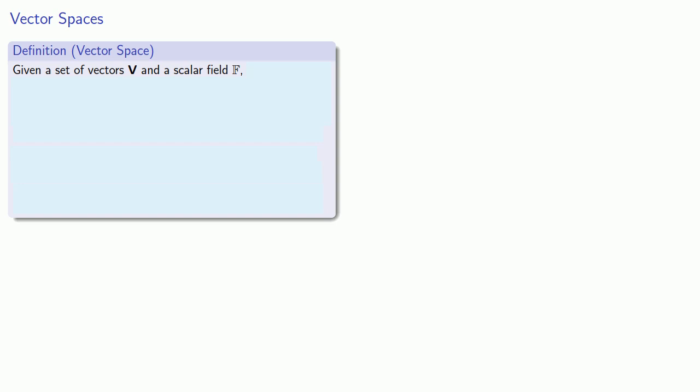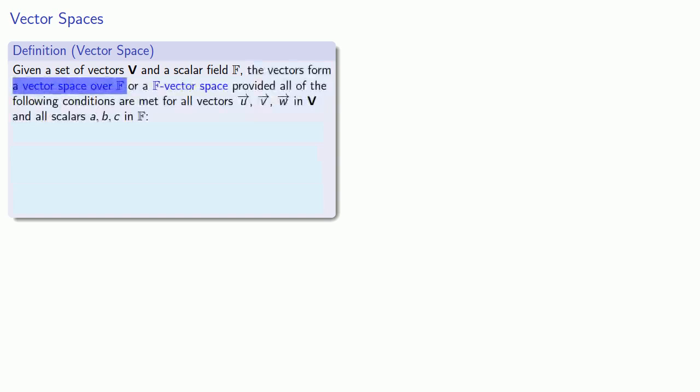We say that the vectors form a vector space over F, or an F-vector space, provided that all of the following conditions are met for all vectors u, v, w in our set of vectors and all scalars a, b, c in our scalar field.